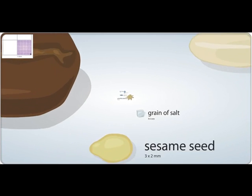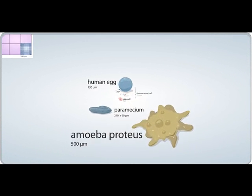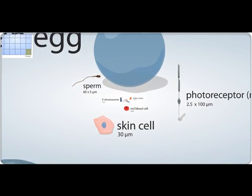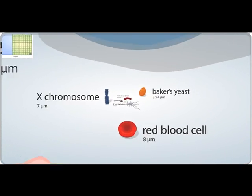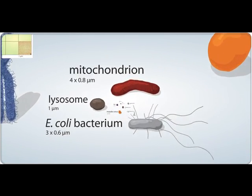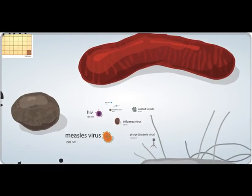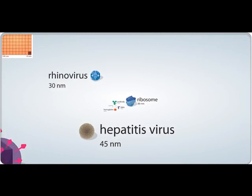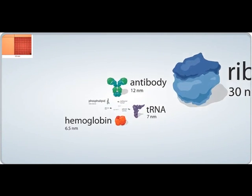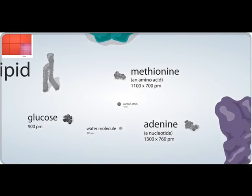Before we begin, I must impress upon you how phenomenally small atoms really are. This animation shows the relative size of ever smaller objects, starting with a coffee bean and ending with a single carbon atom. The indicator at the top left shows the relative scale, and each new square represents a decrease by an order of magnitude. Smaller and smaller we go until finally we arrive at a lone carbon atom.